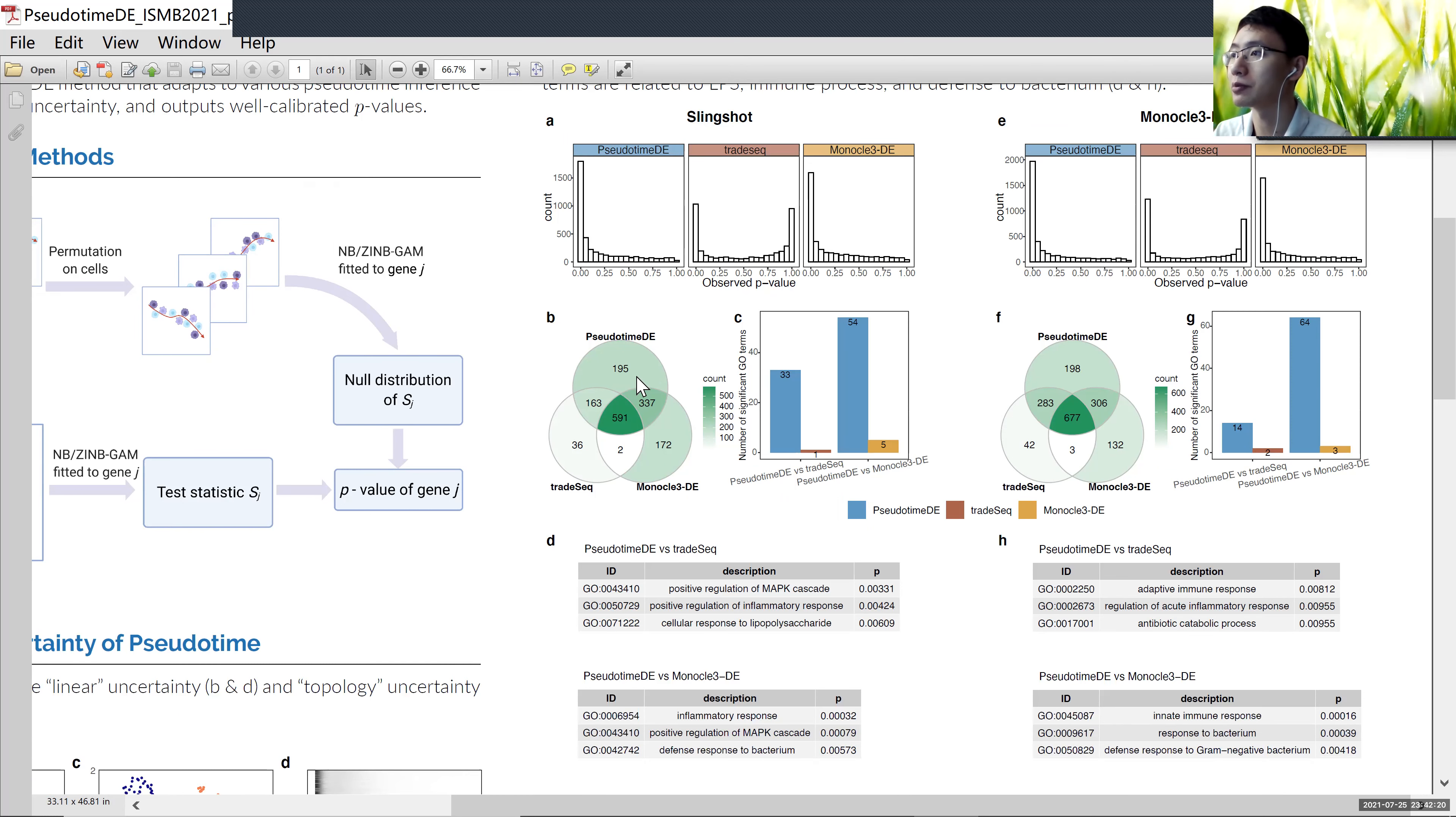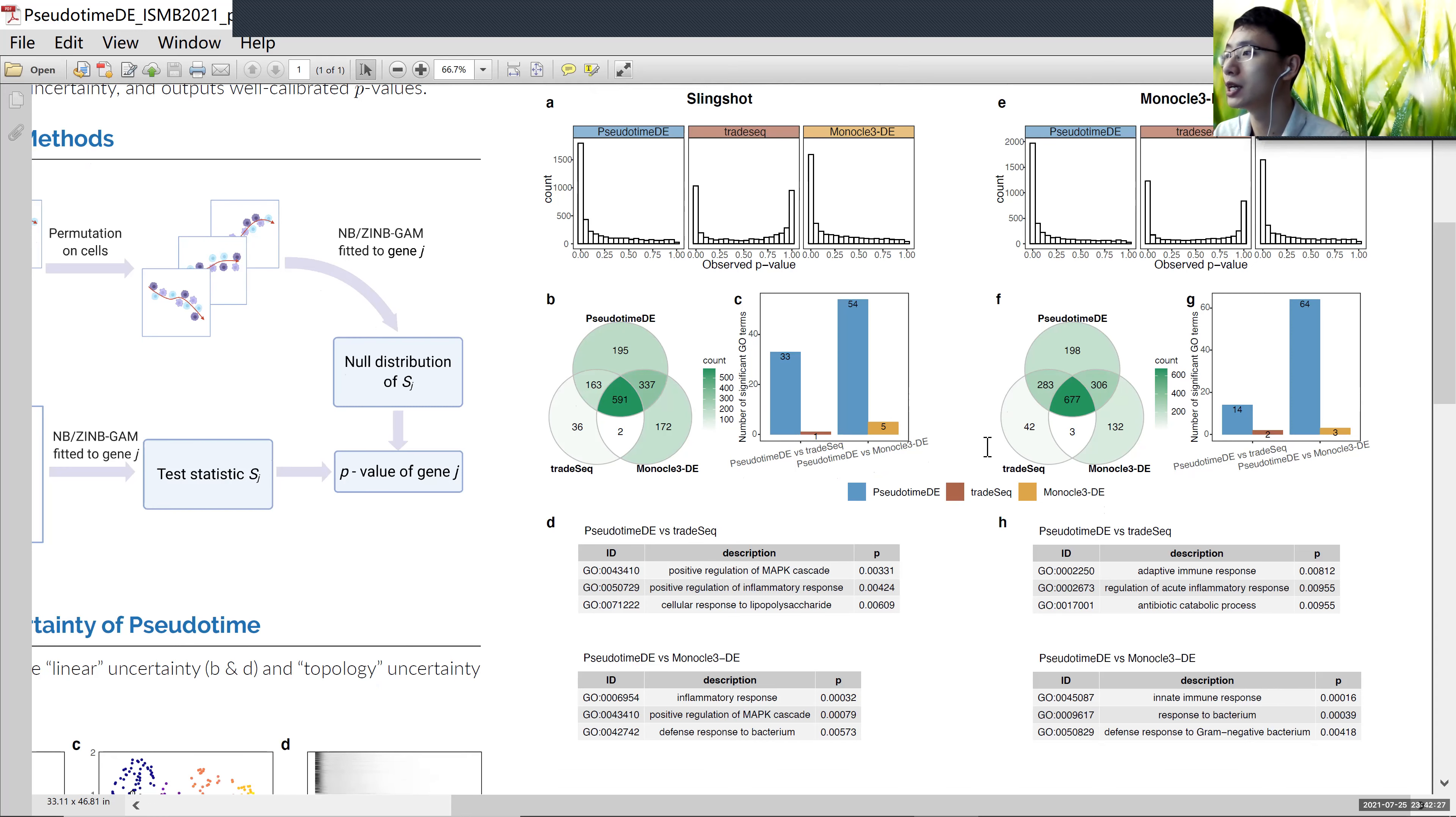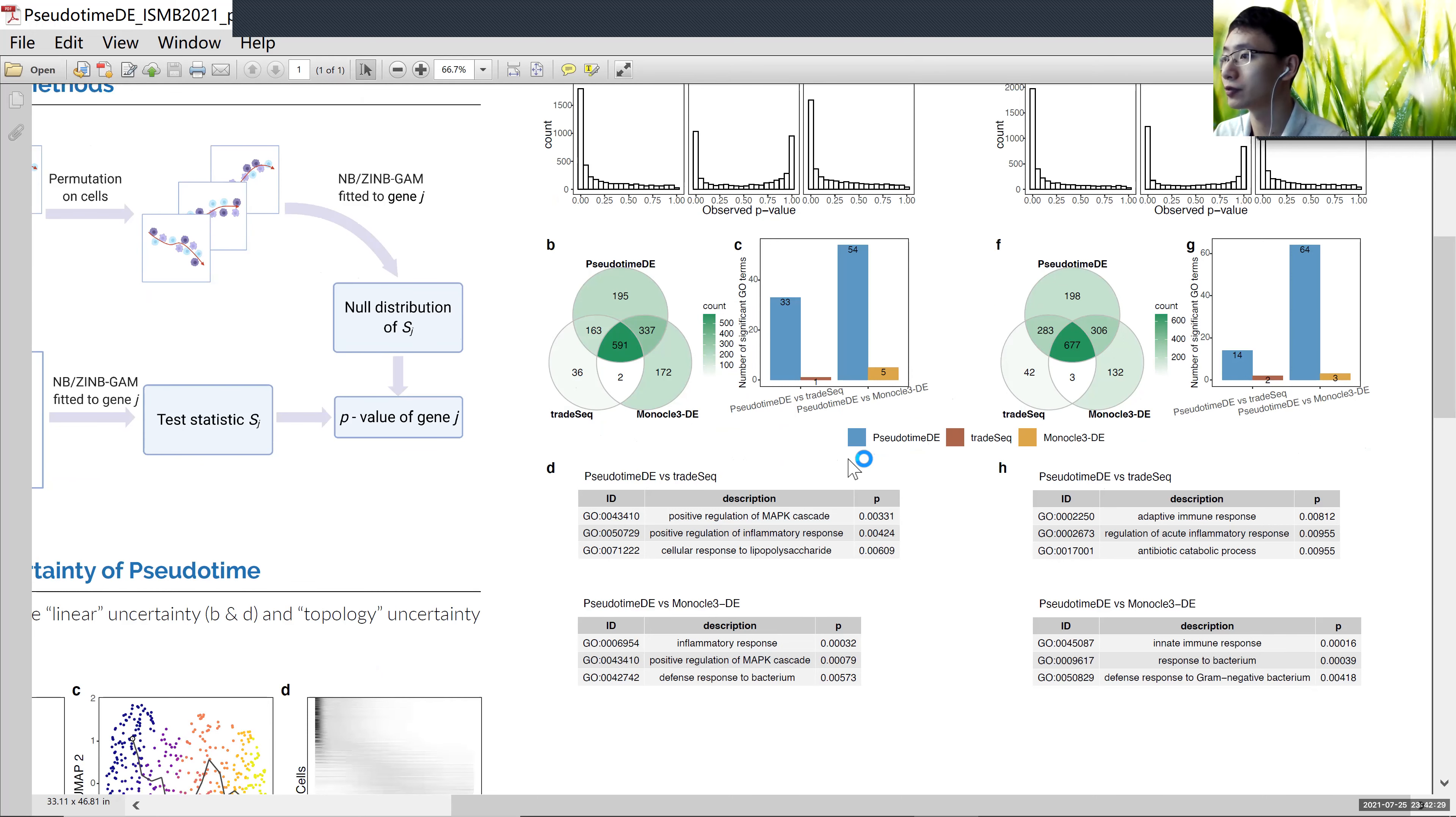Also when we compare the DE genes, the PseudotimeDE-specific DE genes show much higher numbers of enriched GO terms compared to other methods. And when we check those GO terms carefully, we can identify many GO terms which are directly related to the underlying immune process.